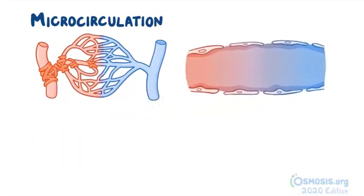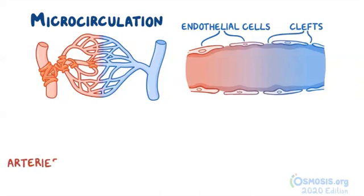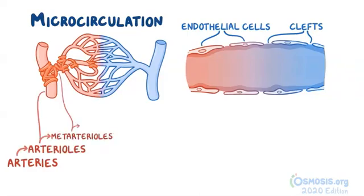The capillaries have a single layer of endothelial cells lining their walls with clefts between these cells. Normally, blood flows into smaller and smaller arteries, eventually reaching the arterioles, the metarterioles, and then the capillaries.